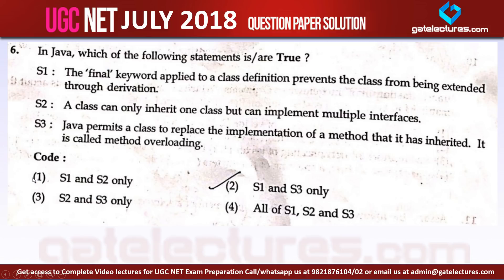Now let us look at question number 6, which is also from Java language. As you can see, in the first 5 questions there are many questions asked from Java programming language. It says: in Java, which of the following statements is or are true? Statement 1: the final keyword applied to a class definition prevents the class from being extended through derivation. Statement 2: a class can only inherit one class but can implement multiple interfaces. Statement 3: Java permits a class to replace the implementation of a method that it has inherited, and it is called method overloading. Now let us look at every statement one by one.